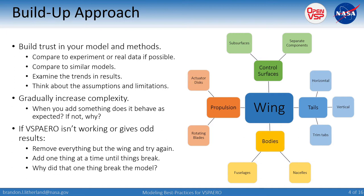Gradually increase your complexity. If you happen to add something and it doesn't behave the way you expected, ask why — is there some feature in what you added that broke it? Is something going on in the wakes where it's being hit by something? Or is there some aerodynamic part of the model impinging on another? So if VSP Aero isn't working, it's returning not-a-number or giving you weird results, take away everything but the wing and then try again. Add one thing at a time until things break, and then figure out what it was about that addition that screwed up the model.